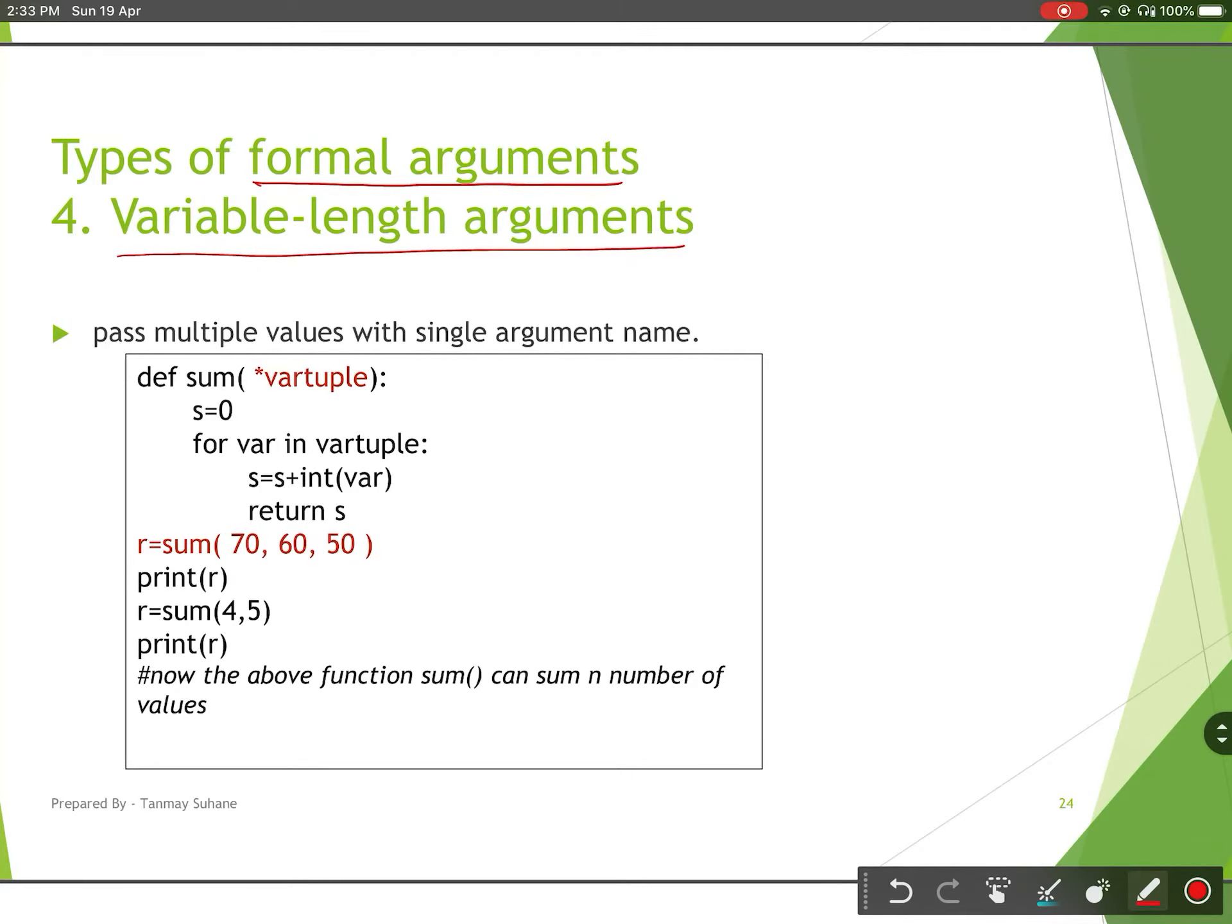As the name suggests, it is a variable length, that means the length of argument will be variable. Sometimes we don't know how many arguments a user is going to pass. To tackle such situations, we will take the argument as a variable length argument.